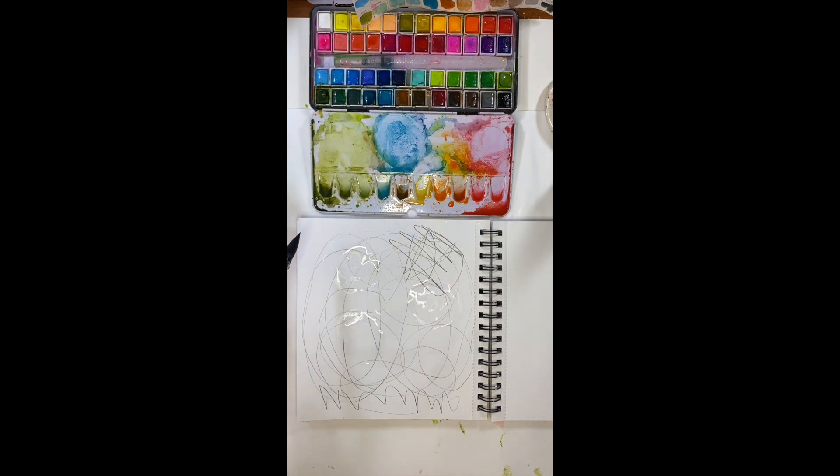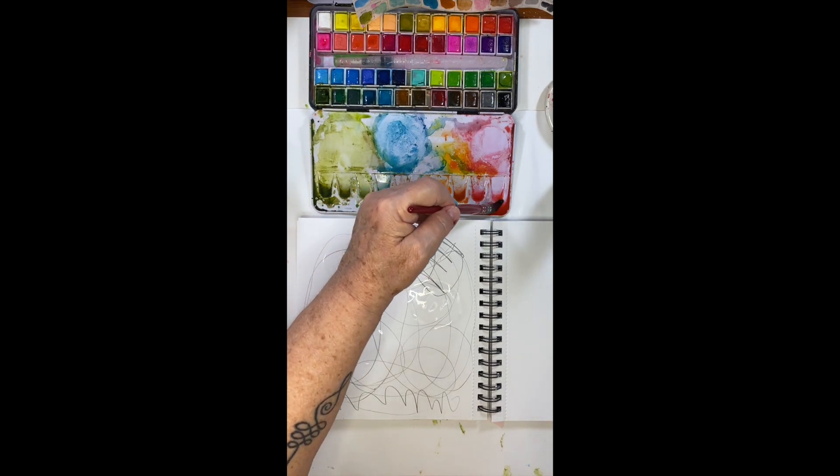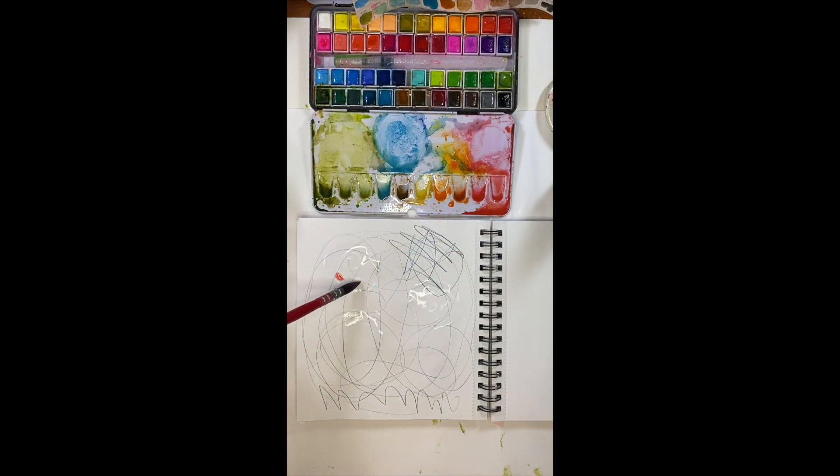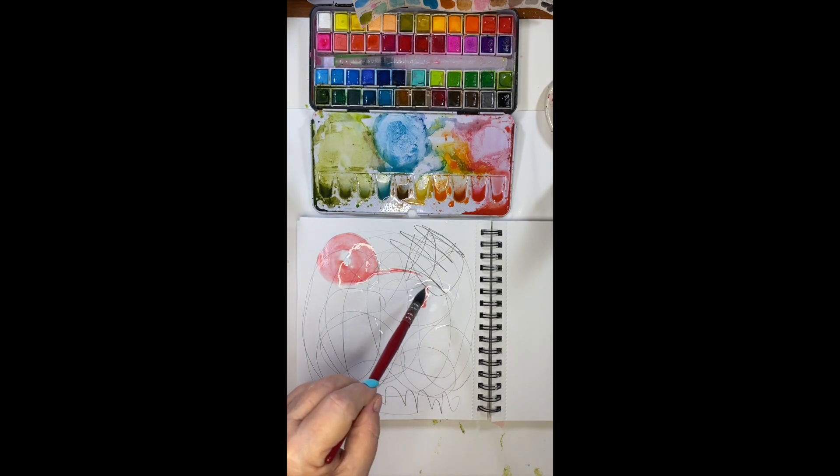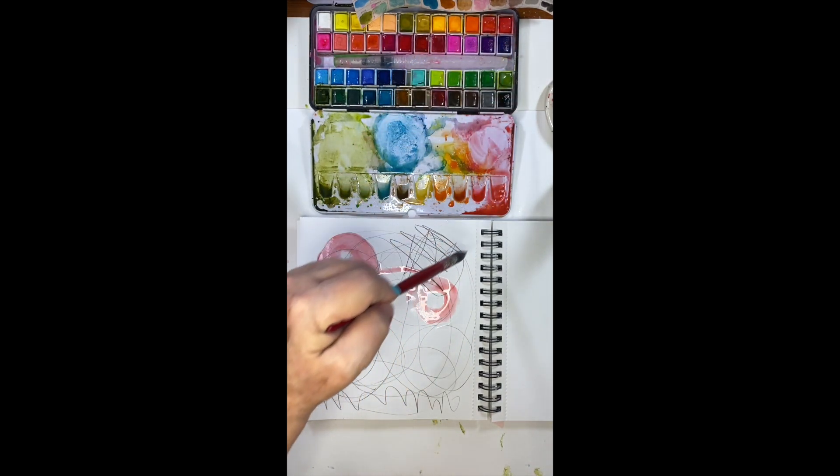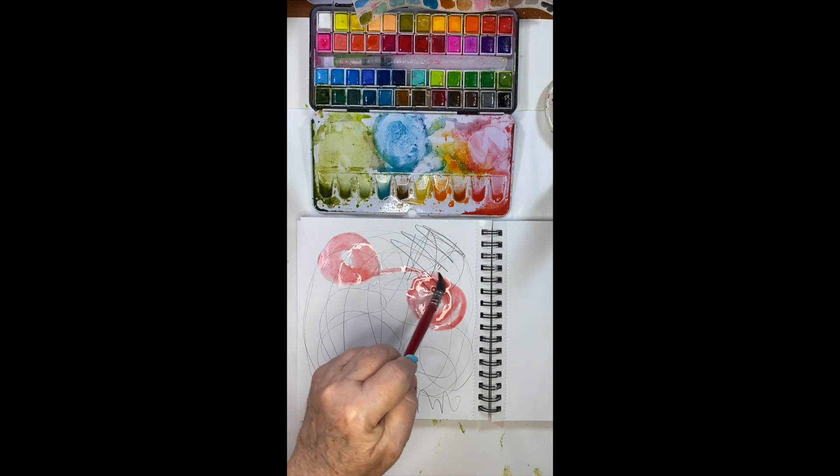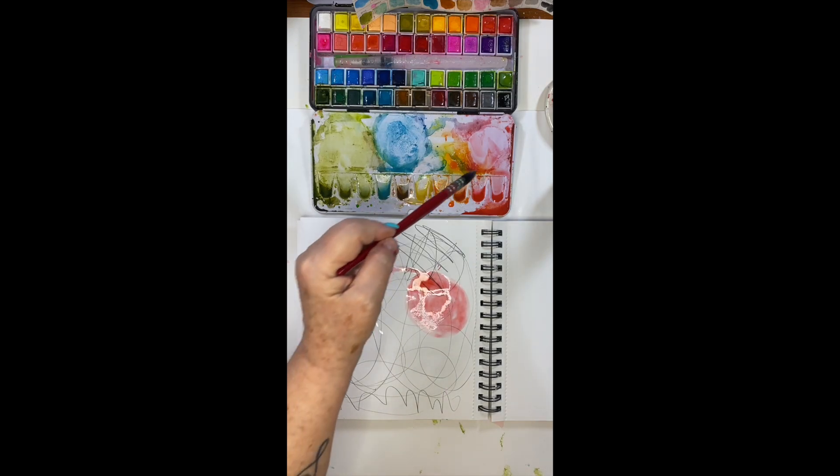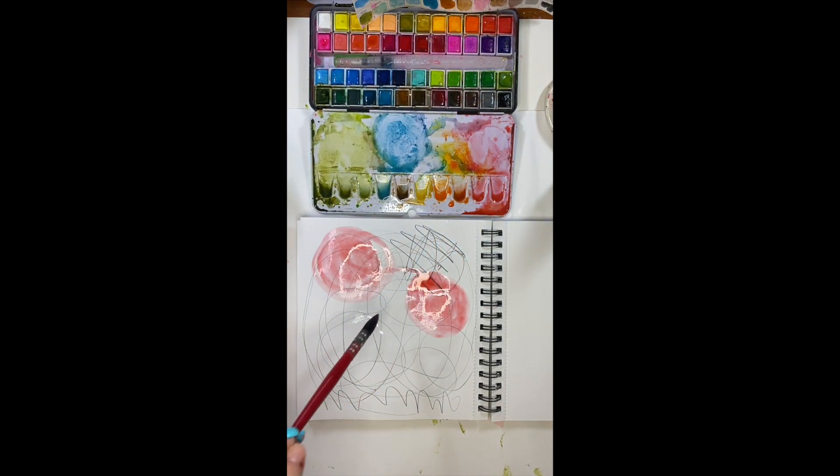And anxiety feels red to me. So I'm going to paint inside that circle. Draw a line to the next circle. Remember, we are not painting art to create something pretty. We are connecting with our emotion through our art.